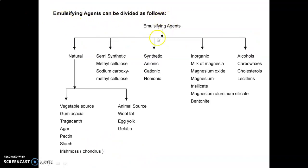Emulsifying agents can be divided as follows: Natural (vegetable source - gum acacia, tragacanth, agar, pectin, starch, Irish moss or Chondrus; animal source - wool fat, egg yolk, gelatin), semi-synthetic (methyl cellulose, sodium carboxymethyl cellulose), synthetic (anionic, cationic, non-ionic containing charges), inorganic (milk of magnesia, magnesium oxide, magnesium trisilicate, magnesium aluminum silicate, bentonite), and alcohols (carbowaxes, cholesterol, lecithins).